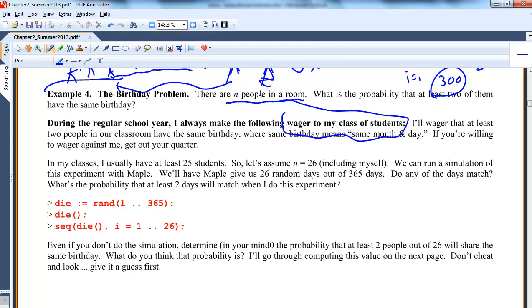So you'll be surprised. I mean, when I have a class, right now there's 25 students and there's me, so there's 26 total. So if I make this wager, what's the probability I'm going to win? Meaning I'm going to wager at least two people do have the same birthday. A lot of people in class will vote against me. But the probability there's at least two or more out of 26 is actually pretty high.